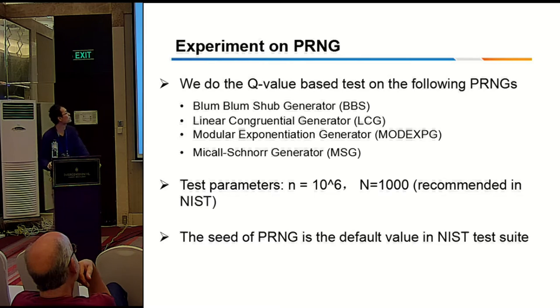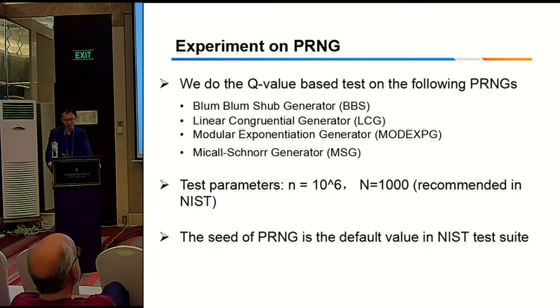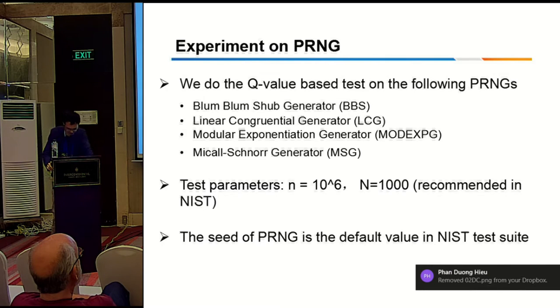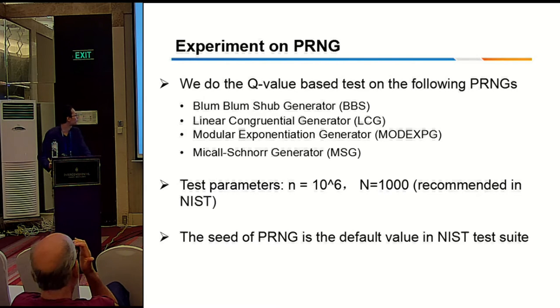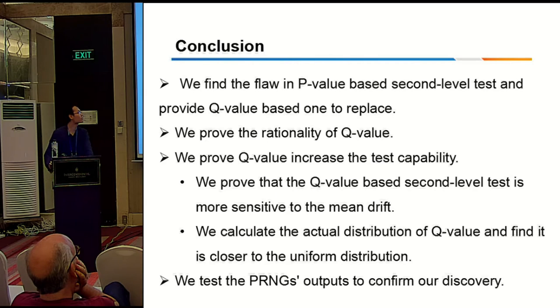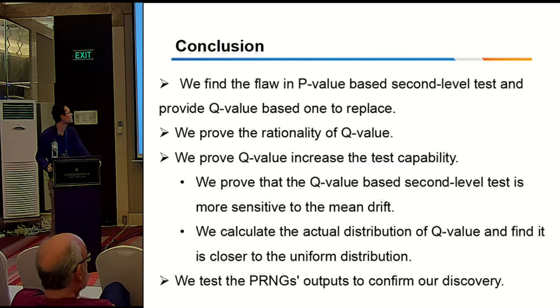And to validate the theory, we do the Q-value test on the following generators. And the experiment results support our solution. And there are more details about the experiment in the paper. This is the conclusion. The standard normal distribution confirms that Q-value is qualified. We proved the rationality of Q-value.